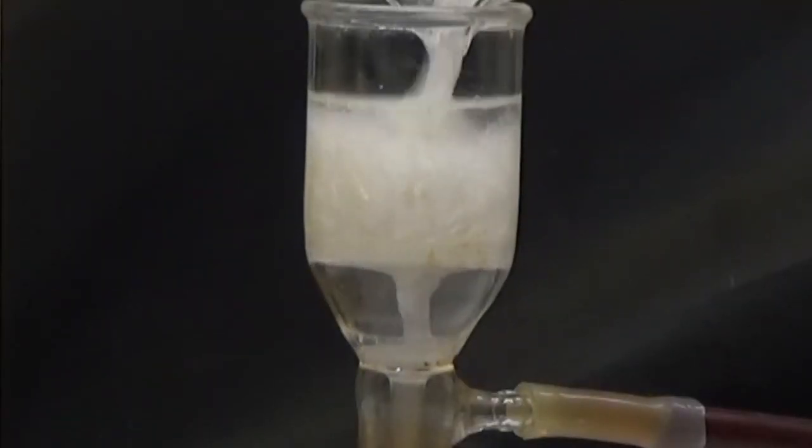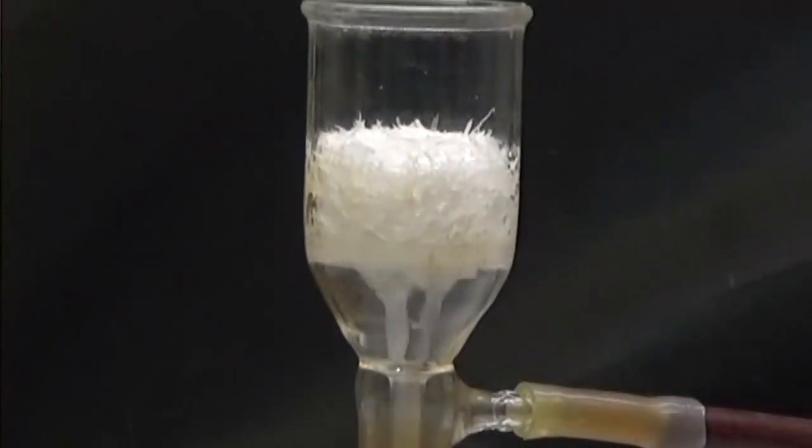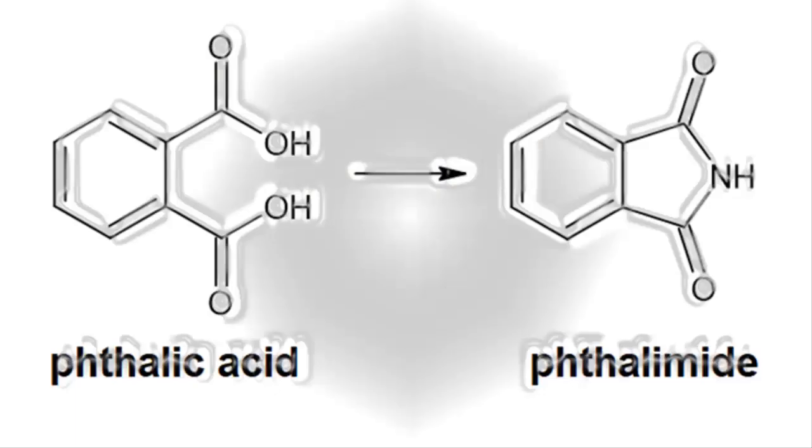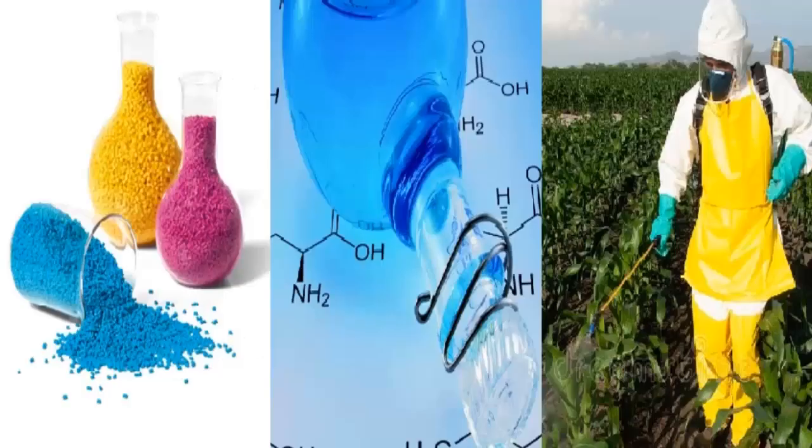In this video, let's see the phthalamide synthesis. Phthalamide is the amide of phthalic acid. It's used in obtaining plastics, chemical synthesis and pesticides.